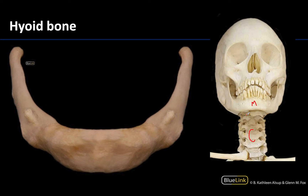Right in this region here you can see a bone that looks a bit anterior to the cervical vertebrae — this will be the hyoid, and it's about at the level of C3.